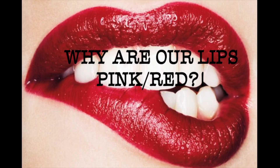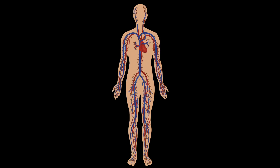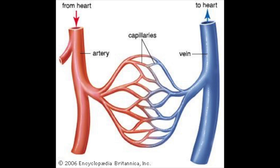Why are our lips red? We'll first have to take a quick look at what arteries and capillaries are. Arteries and veins are blood vessels that carry blood from or back to the heart. Arteries are red while veins are blue. The veins carry deoxygenated blood to the heart to be oxygenated again, and arteries carry blood from the heart to deliver to the rest of the body.